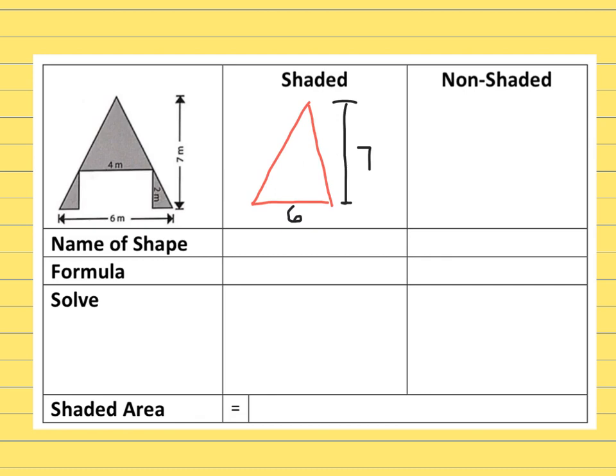The non-shaded space is this area in here that used to be but now it's cut away—is a rectangle. And the dimensions for the rectangle are four and two. I'm going to put my rectangle over here and put my numbers for length and width.